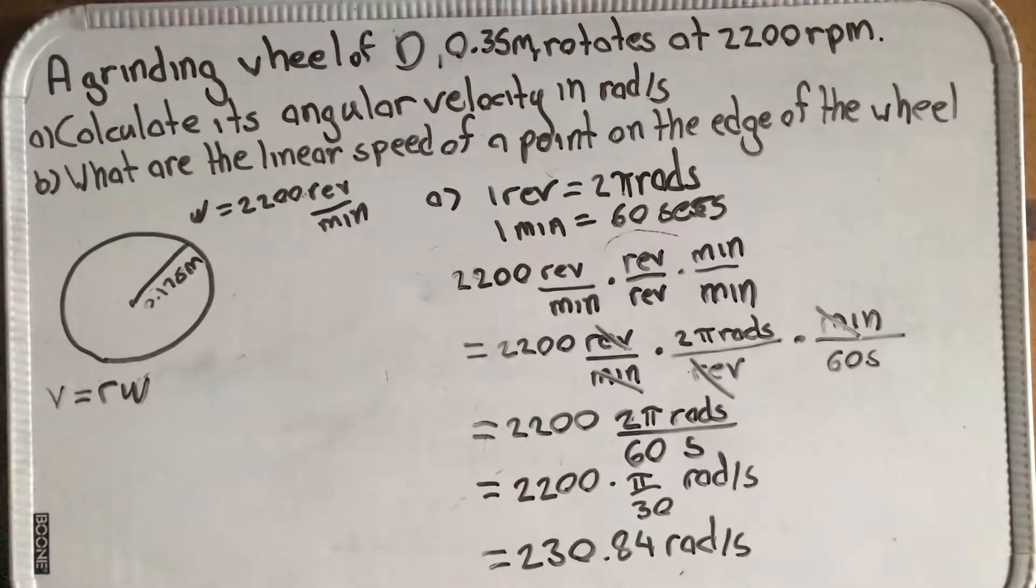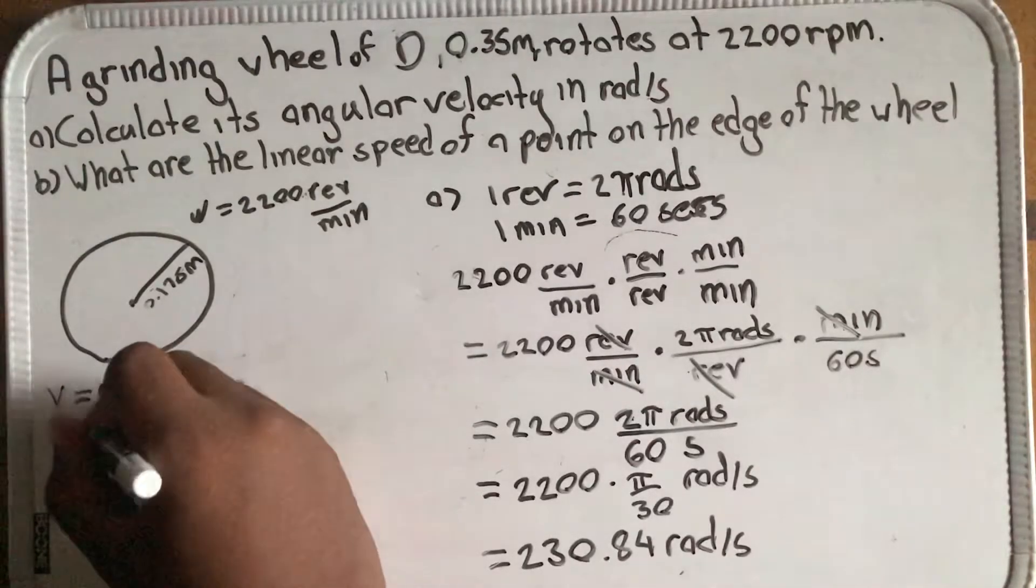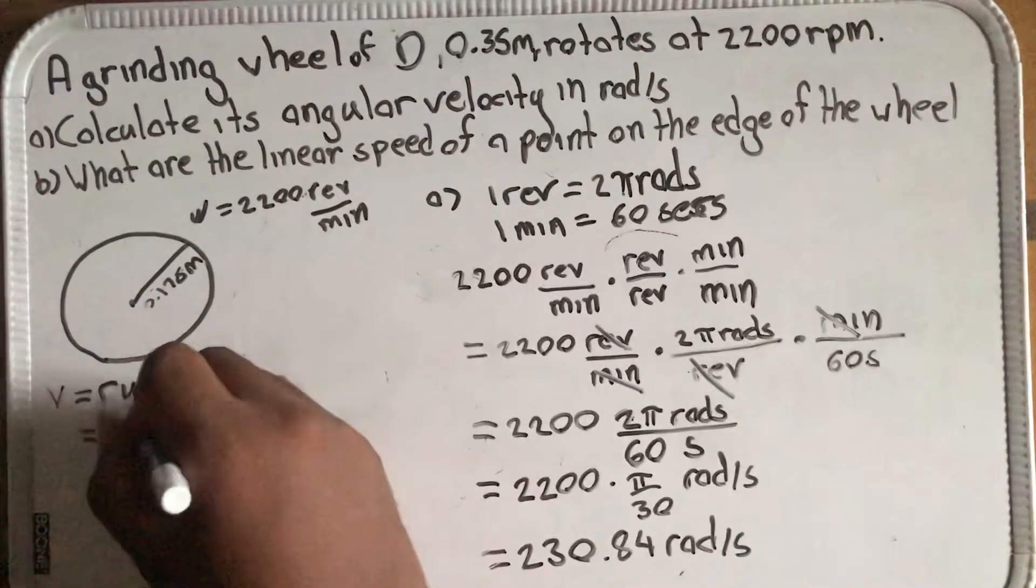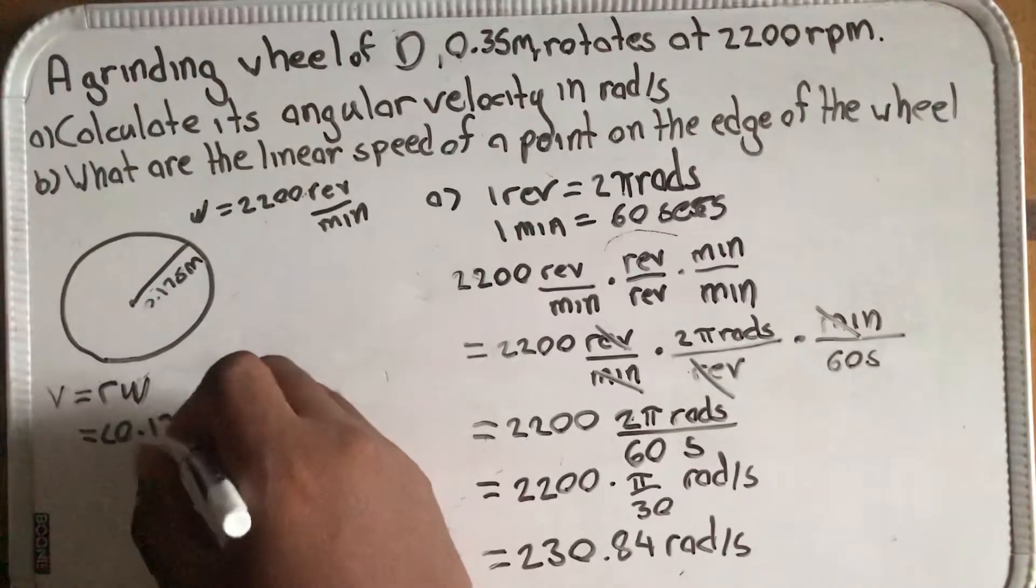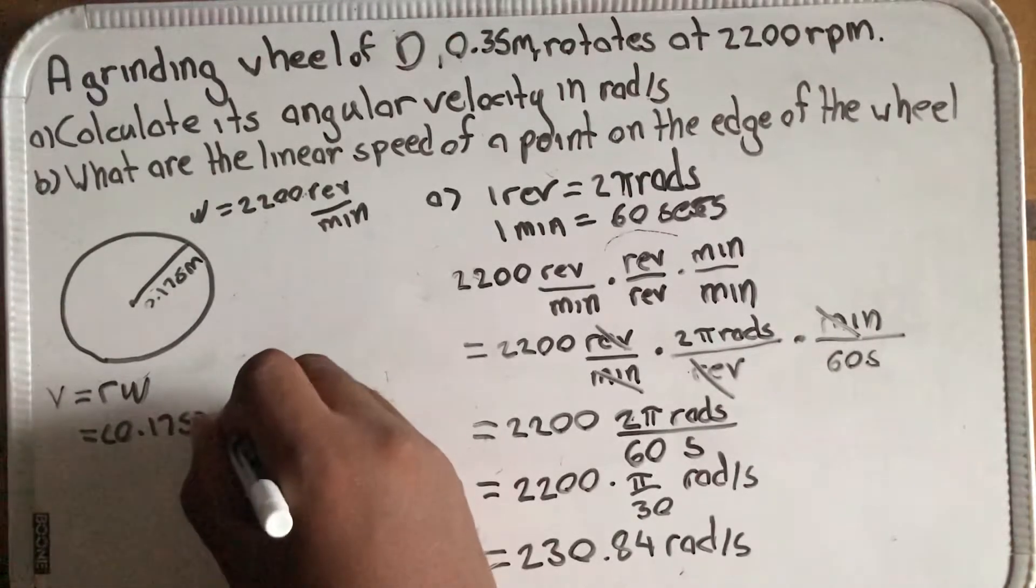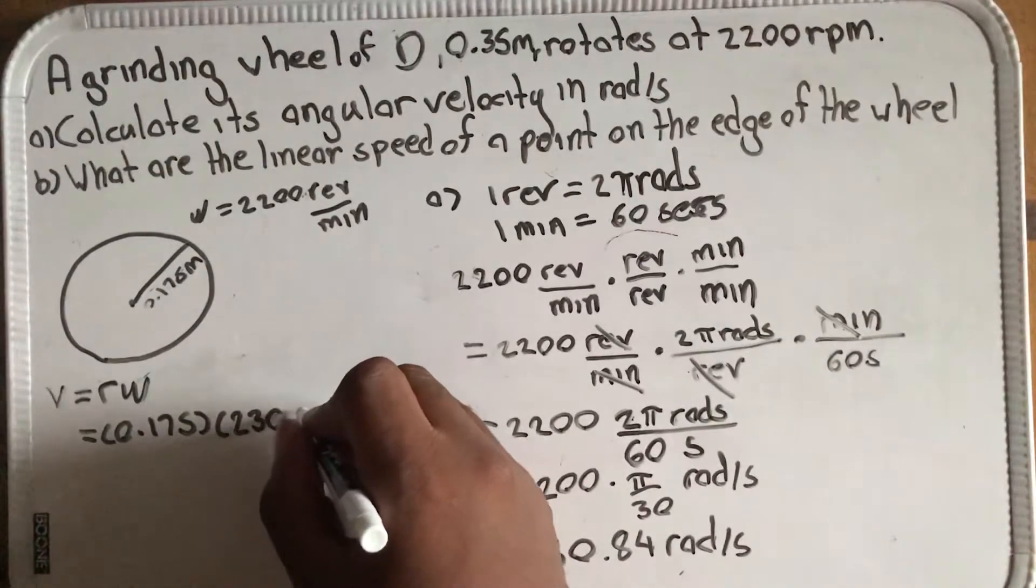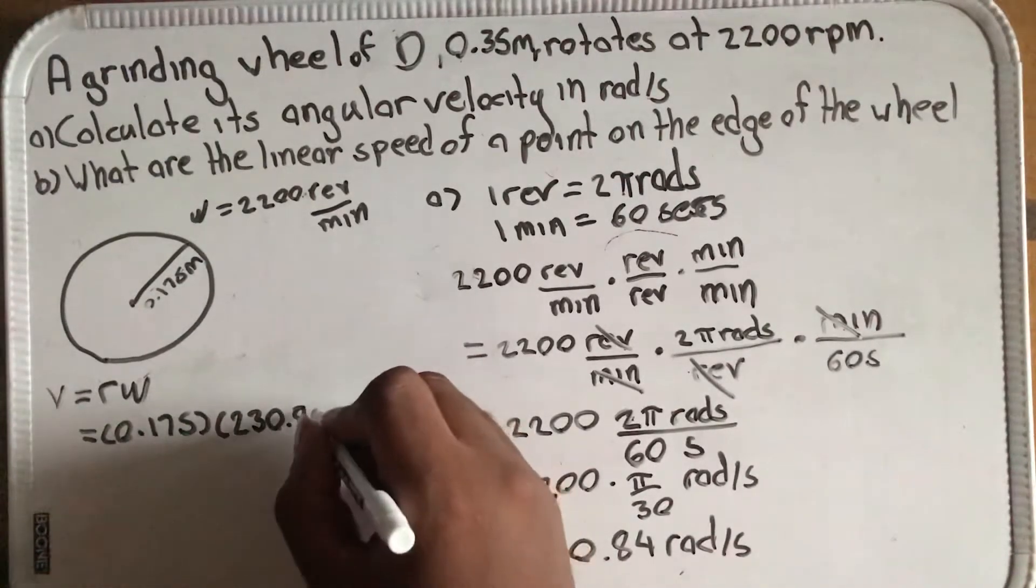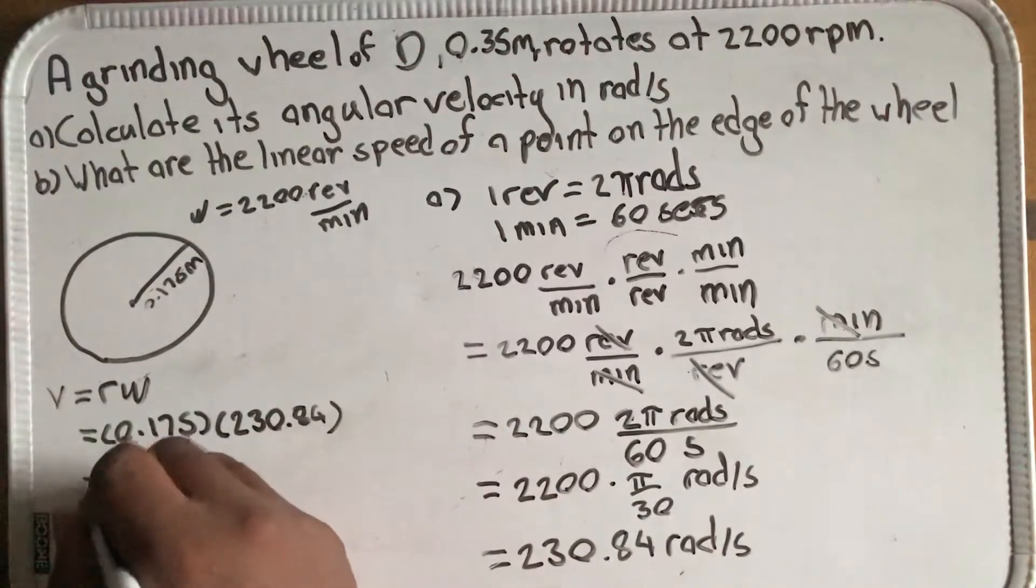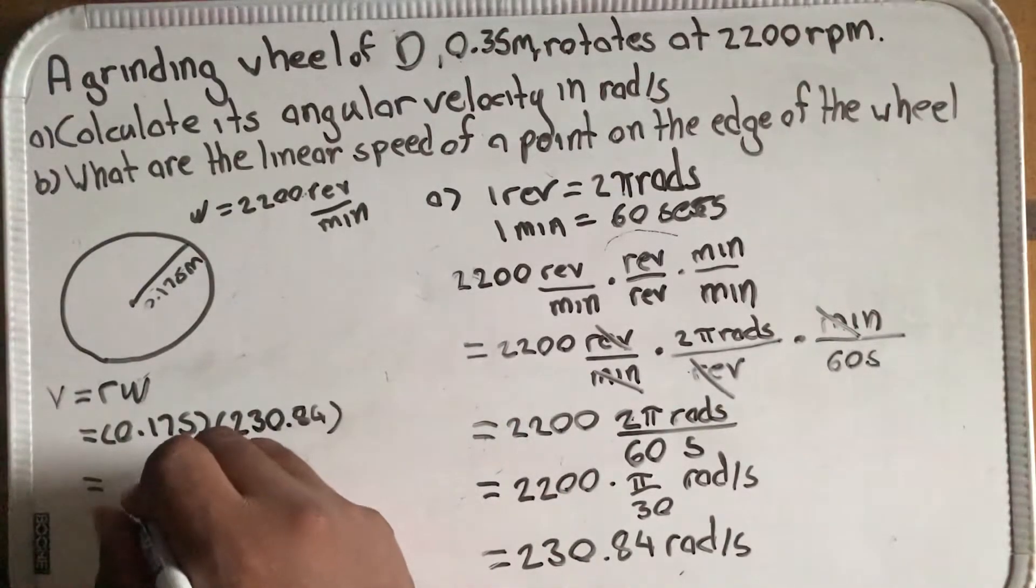Now using these, we know our radius is 0.175 and our angular velocity is 230.84, so our linear speed works out to be 40.31 meters per second.